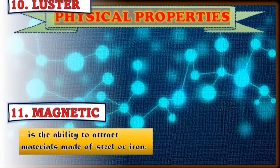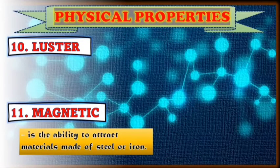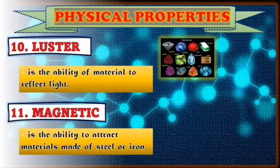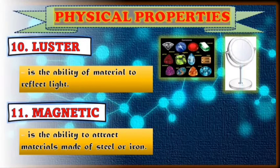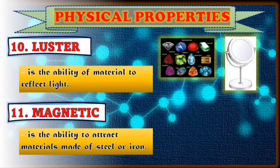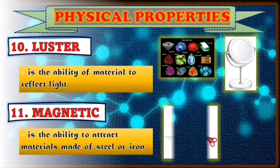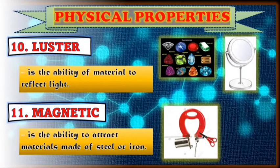Next physical property is what you call luster. Luster is the ability of the material to reflect light. Examples of these are our jewels, gems, mirrors, and glass. Those are examples of what you call luster. Next one is magnetic — it's the ability to attract materials made of steel or iron. When you use a magnet, all materials that stick to it are what you call magnetic.